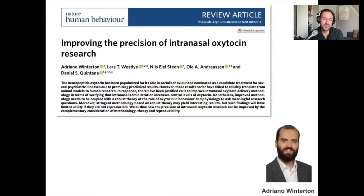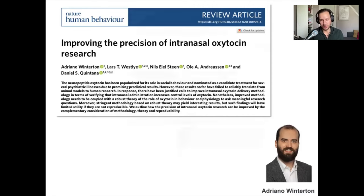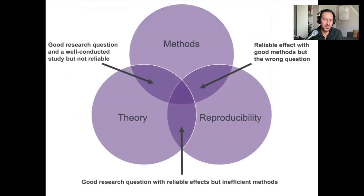A couple of years ago we wrote an article about ways to improve the precision of intranasal oxytocin research, making a number of recommendations that aren't exclusive to oxytocin research — this framework is useful for all areas of biomedical research. There's been a big focus in open science and reproducibility on replication studies, and that is important. But at the same time, we also need to consider methods and theory. We need all three factors to take the biomedical sciences forward.